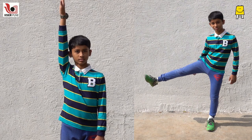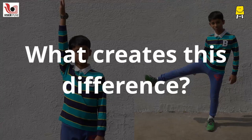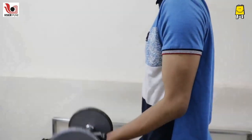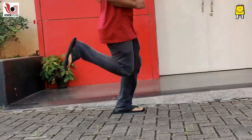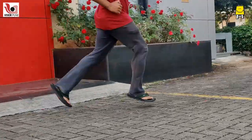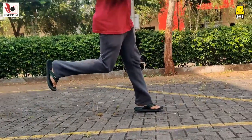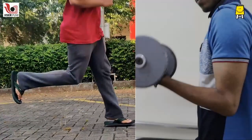Movements can be the same but actions can be different. What creates this difference? While lifting weights and running, the arms and legs fold and unfold similarly.